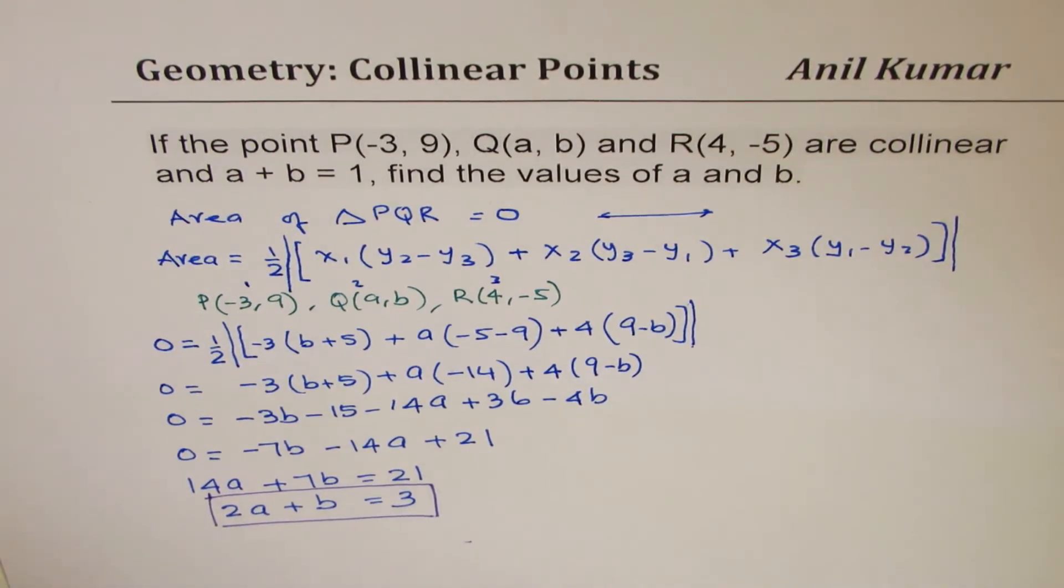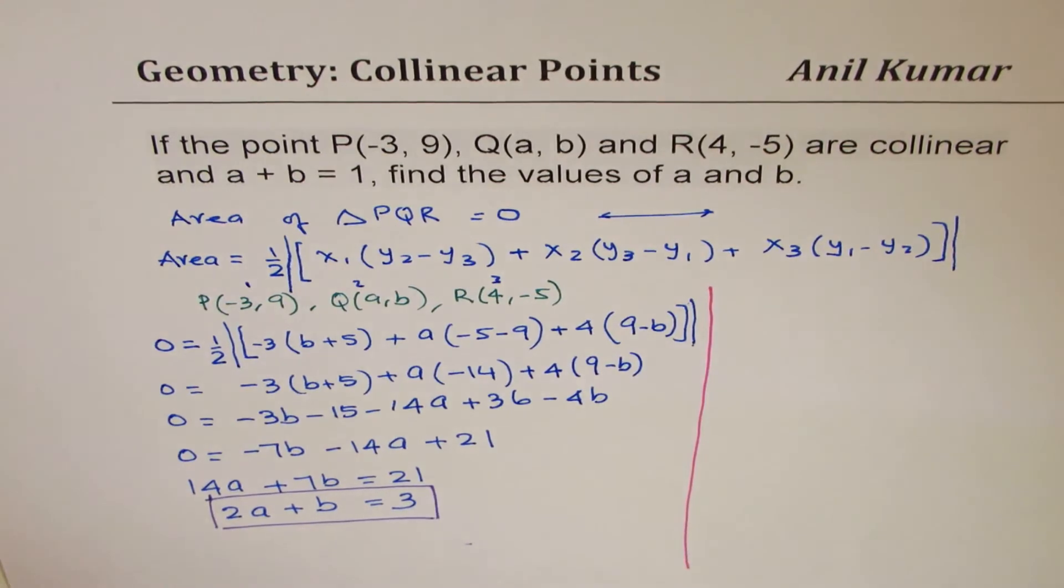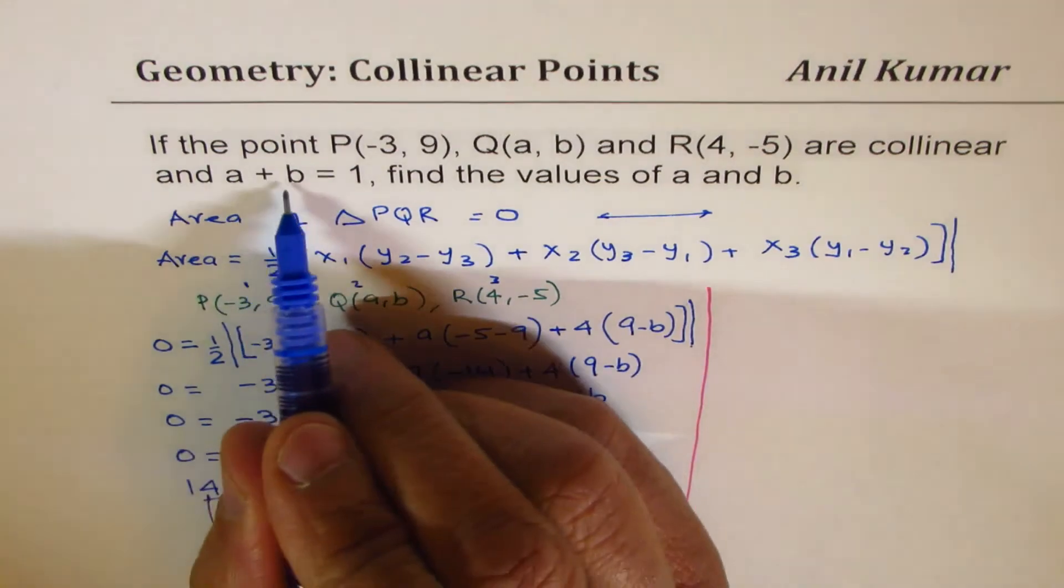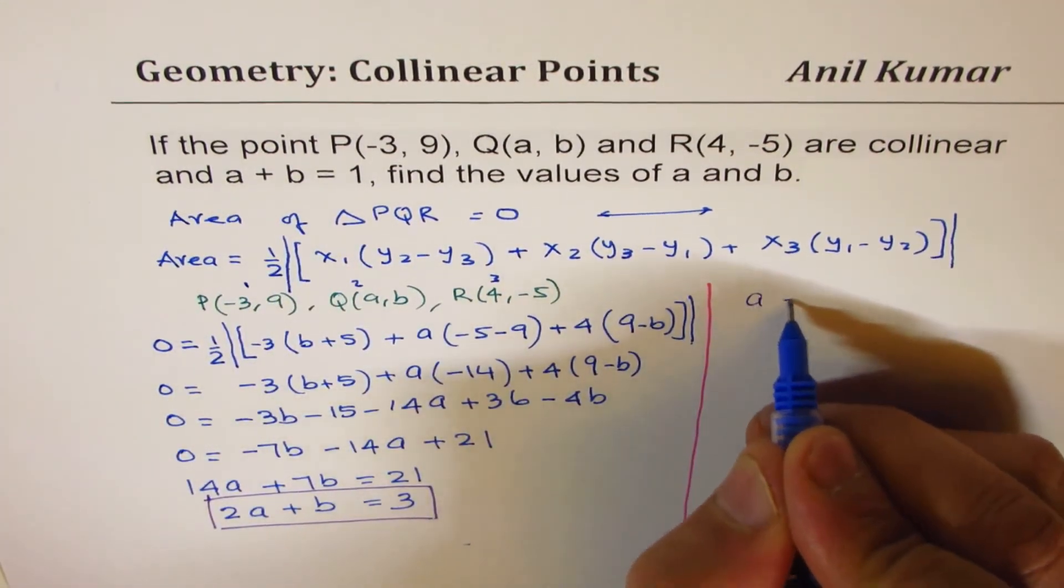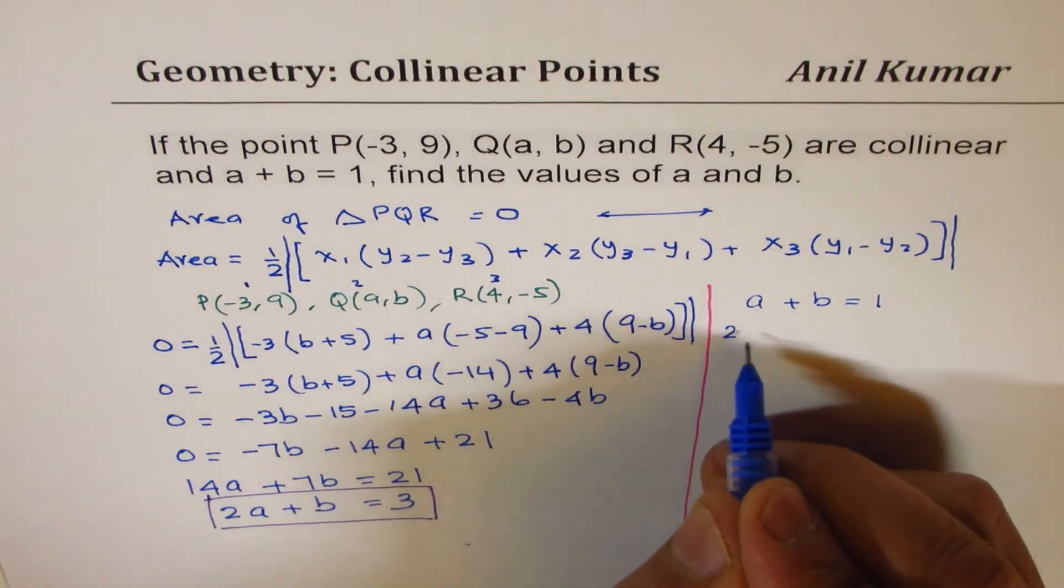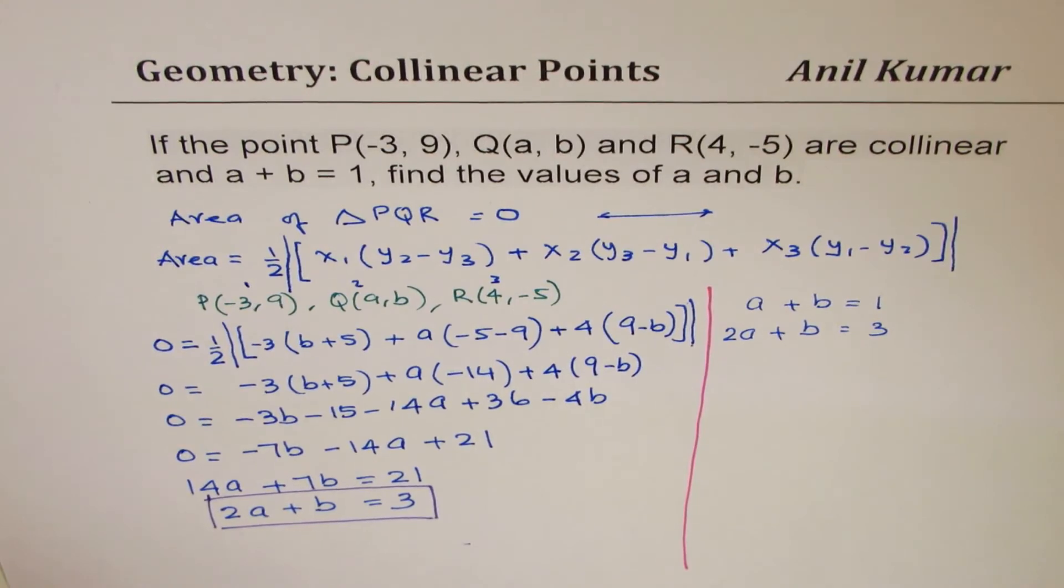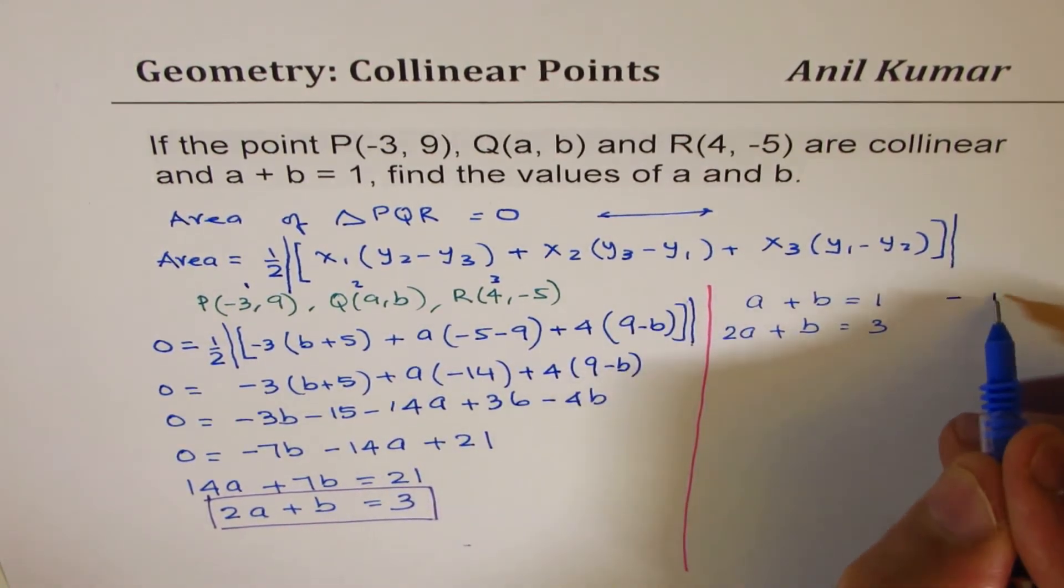We are already given A plus B is 1. So we will use these two equations now. One equation given to us is A plus B equals to 1. Second, we just got 2A plus B equals to 3. Now these are the two equations to solve to find both A and B.